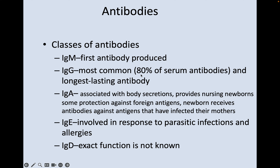There are several different classes of antibodies you should be familiar with. Immunoglobulin M antibodies are the first antibodies produced. Immunoglobulin G is the most common — 80% of serum antibodies — and the longest-lasting. Immunoglobulin A is associated with body secretions and provides nursing newborns with protection, as the newborn receives antibodies against any antigens that have infected their mothers. Immunoglobulin E is involved in responses to parasitic infections and allergies. Immunoglobulin D is still actively being researched — we're not 100% sure of its function.